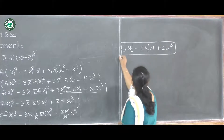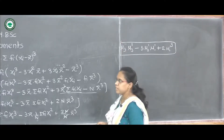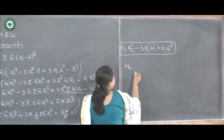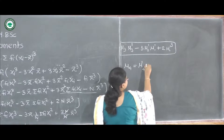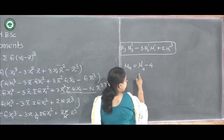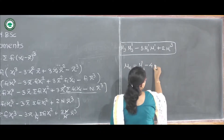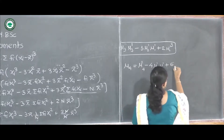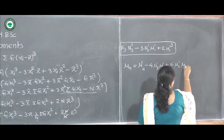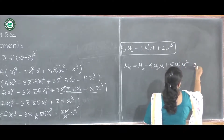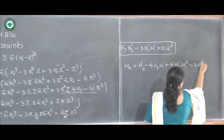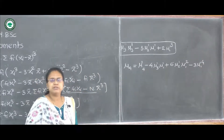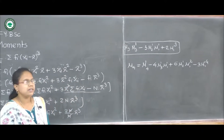Similarly, the relation between μ4 and the raw moments is obtained as: μ4 = μ4 dash minus 4·μ3 dash·μ1 dash plus 6·μ2 dash·(μ1 dash) squared minus 3·(μ1 dash) raised to 4. By these expressions we get the complete relation between raw moments and central moments.